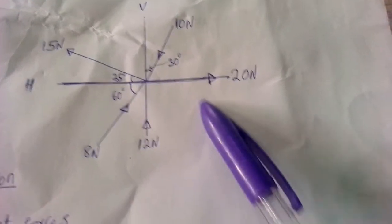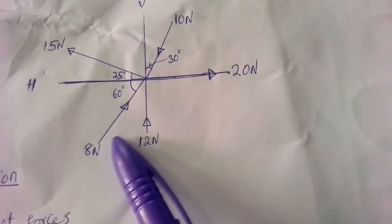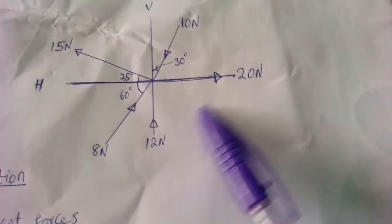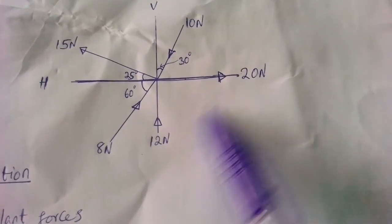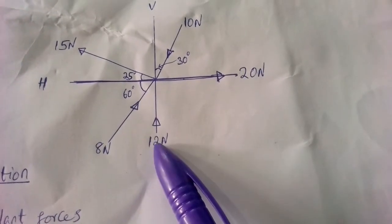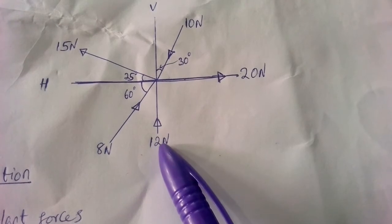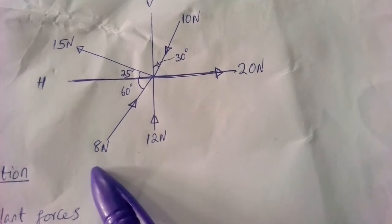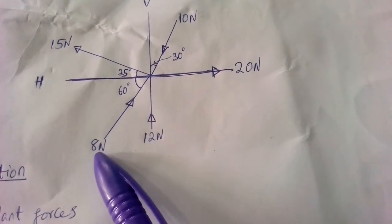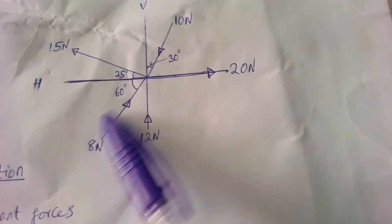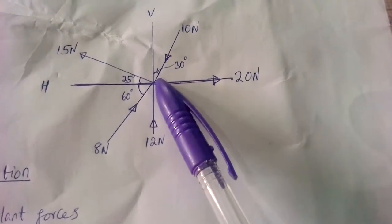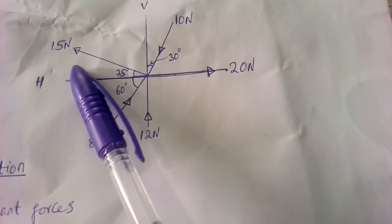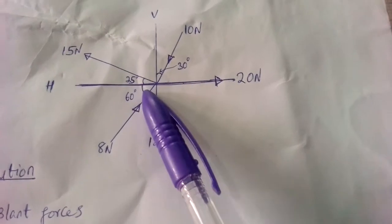As you can see we have five forces here. We have the one of 20 Newton on the horizontal, the one of 12 Newton on the vertical, a slant force of 8 Newton at 60 degrees, another slant force of 10 Newton at 30 degrees, and another slant force of 15 Newton at 25 degrees.